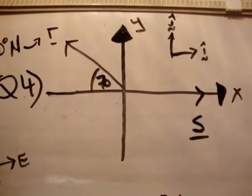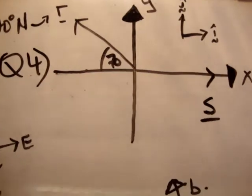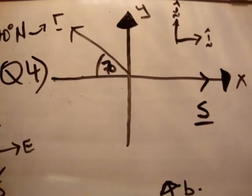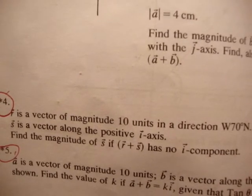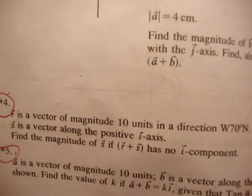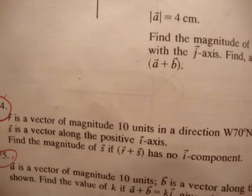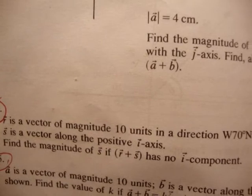In this video, I'm going to continue on with exercise 1e on page 34 of Fundamental Applied Mathematics. The question I'm going to do is number 4. So r is a vector of certain magnitude in a certain direction, s is a vector of a certain direction, and we need to find the magnitude of s if r plus s has no i-hat component.